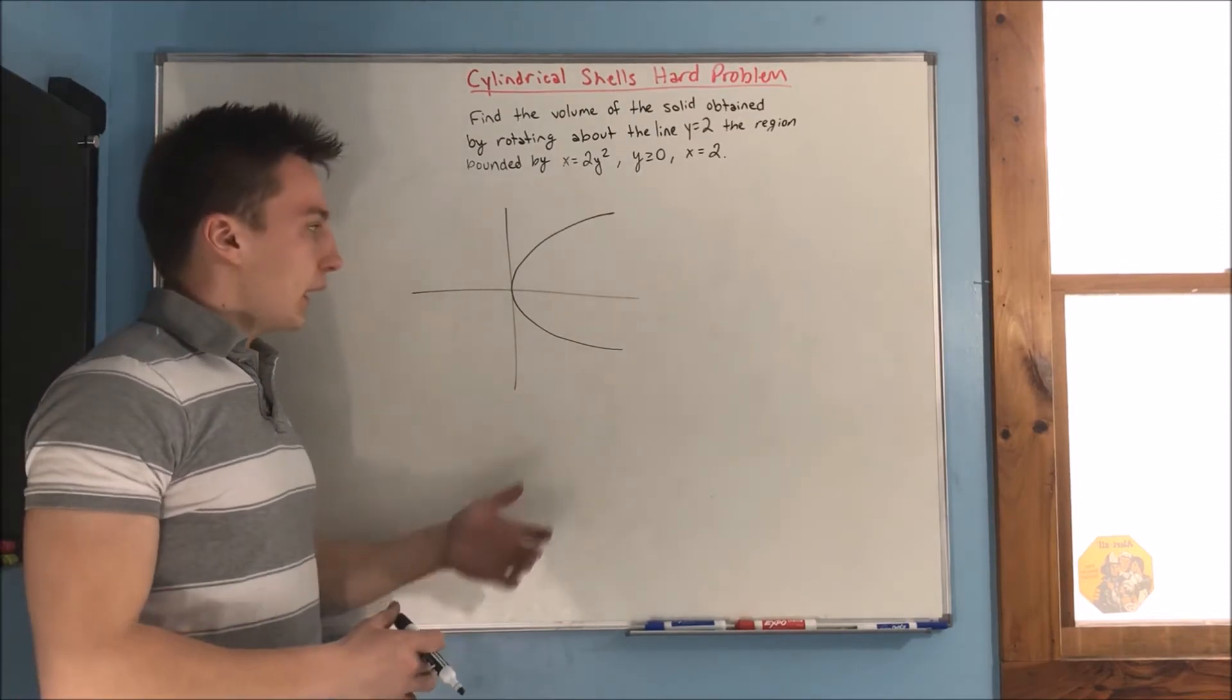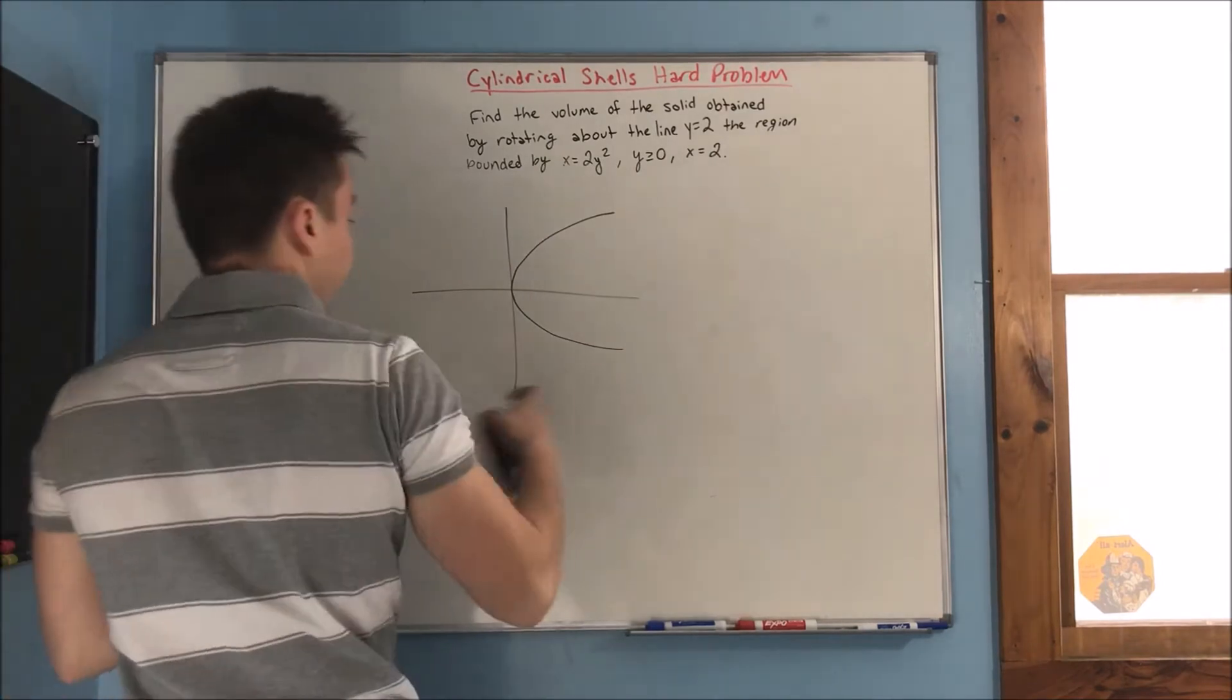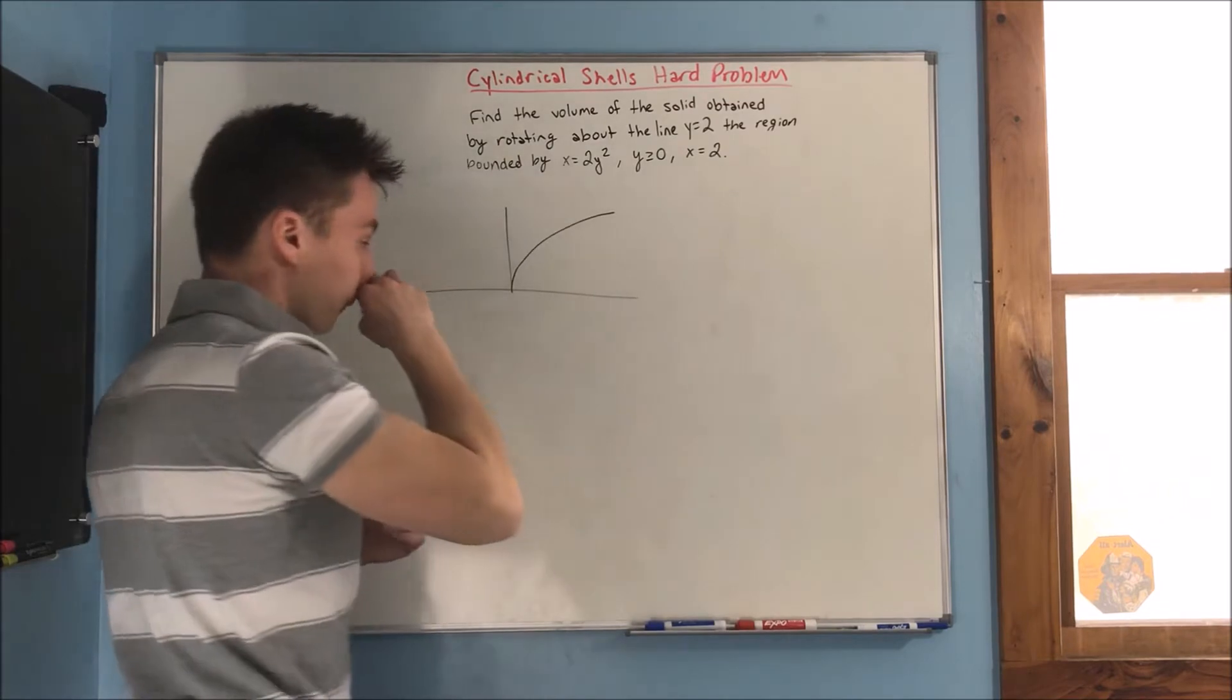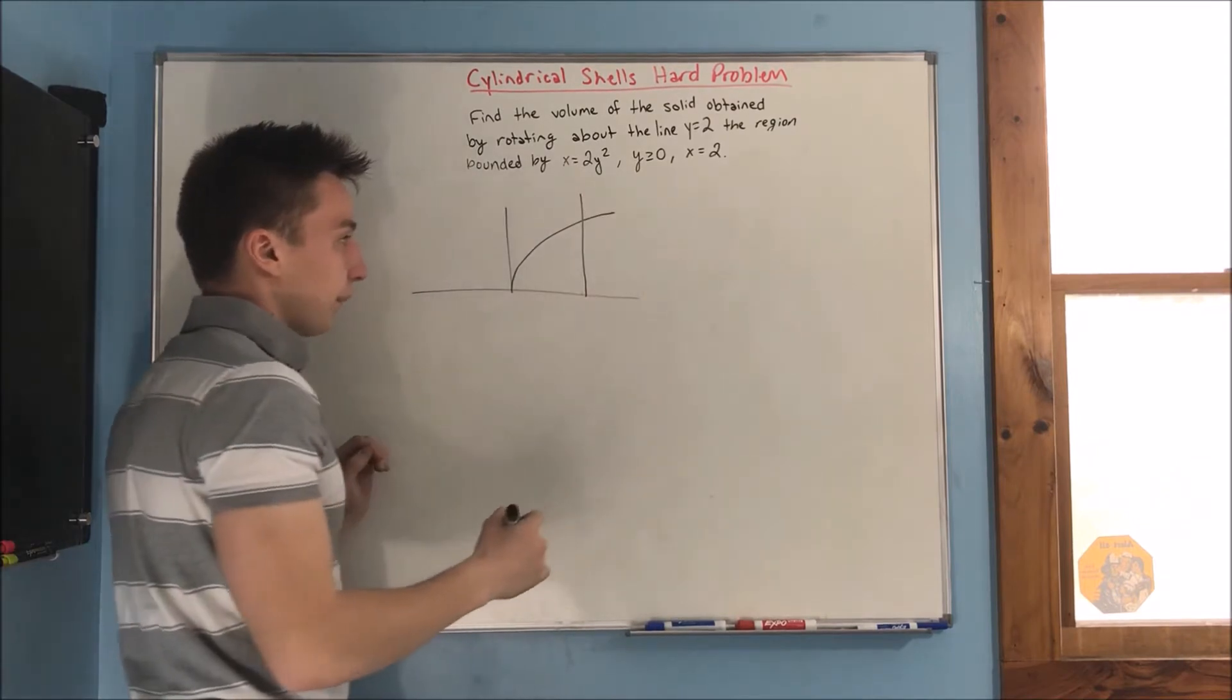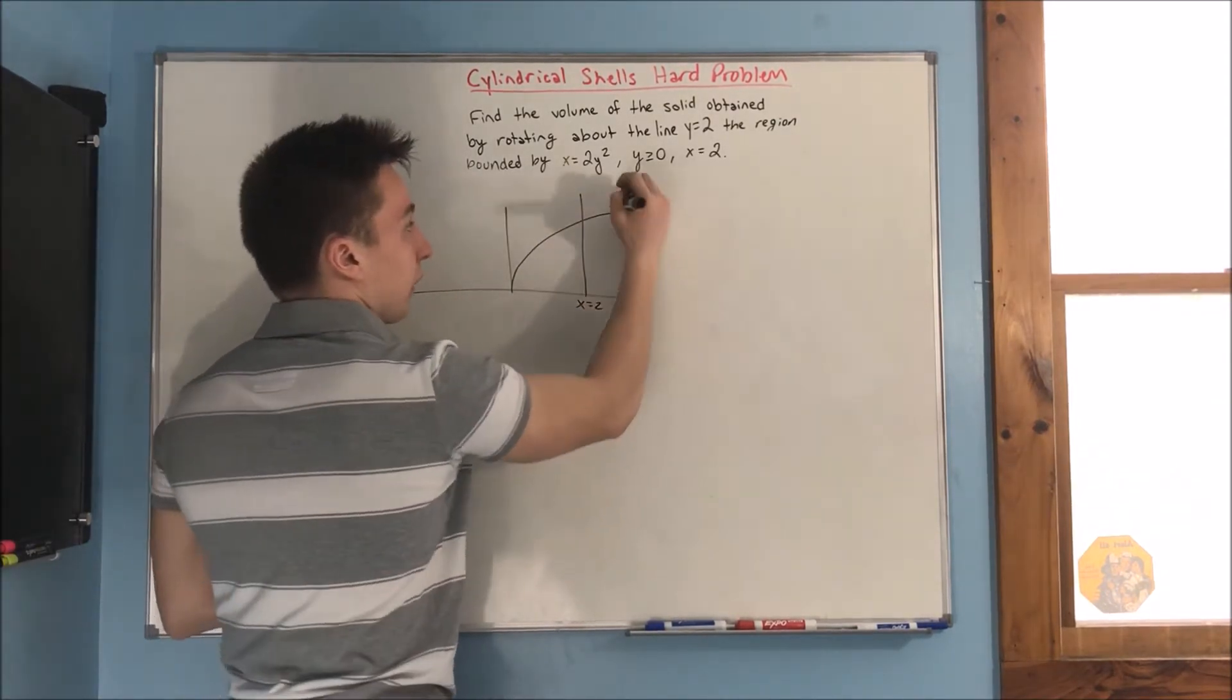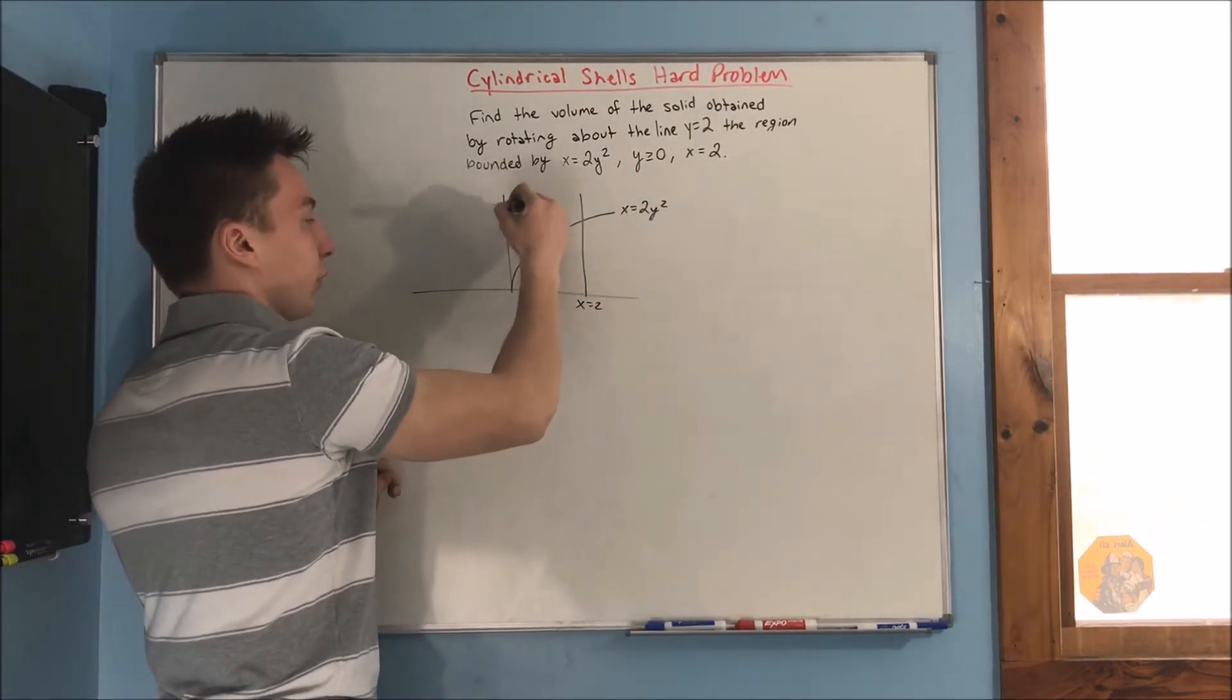And we know that y is greater than or equal to 0. Okay, what's that mean? Well, that means that y is not going to be negative. So, we can just forget about everything below the x-axis. Okay? We also have x equals 2, alright? And that's going to be this right here. So, now we have, we have our x equals 2, we have our x equals 2y squared, we're revolving around y equals 2.